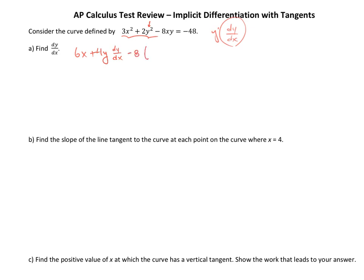Minus — I'm going to put the 8 on the outside here, and I'm going to need the product rule here. So, this will be the first times the derivative of the second, so the derivative of y would be dy/dx, plus the second times the derivative of the first, which would just be 1, equals — the derivative of that is just going to be 0. So, let's clean this up. You end up with 6x plus 4y dy/dx, minus 8x dy/dx, minus 8y equals 0.